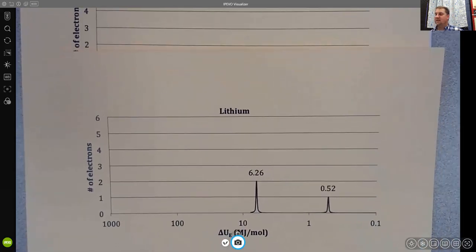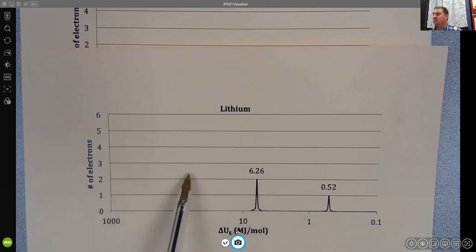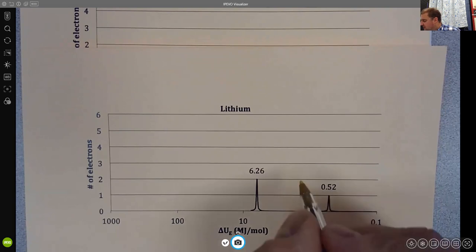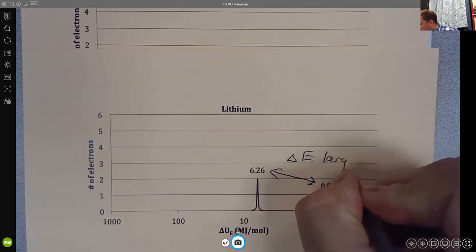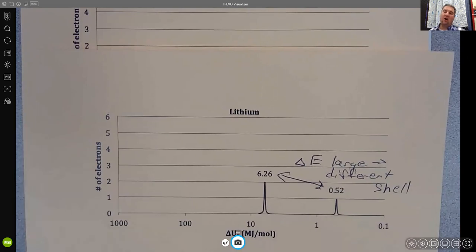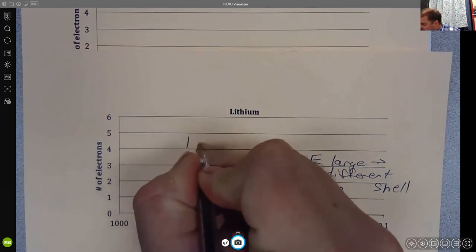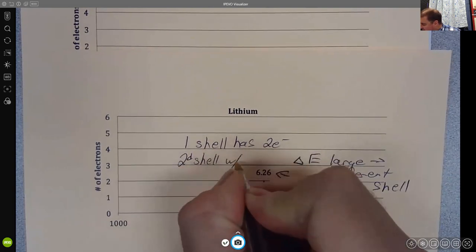Here we see that lithium doesn't just have a single peak, it now has two peaks. One of those peaks still corresponds to two electrons, but the next peak now corresponds to only one electron. What this tells us is that in the atom, there are two electrons in one energy level of lithium and there is one electron in another energy level of lithium. Notice there's a pretty big difference in energy here. Delta E large means different shell, which is what we're going to call these energy levels for where the electrons are in the atom. There's one shell with two electrons and a second shell with one electron for lithium.